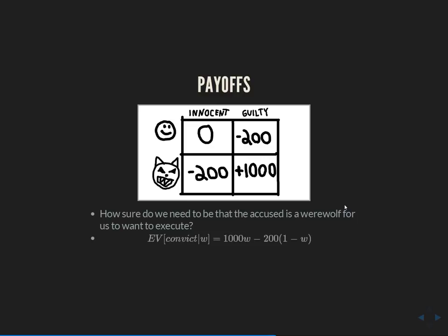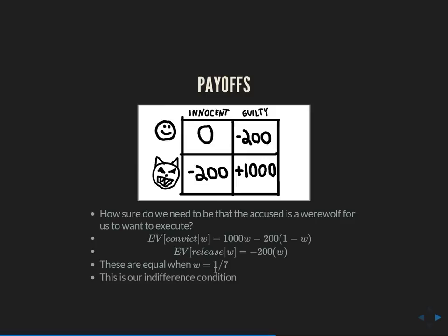We need to figure out: how sure do we need to be that the accused is a werewolf for us to want to execute? The EV of convicting someone given certainty level w is: we get 1,000 when we're right (probability w) and lose 200 when we're wrong (probability 1 − w). The EV of releasing someone is 0 when wrong and −200 when right. Setting those equal, we're indifferent when there's a 1-in-7 chance he's a werewolf. This indifference condition is crucial to solving for equilibria.